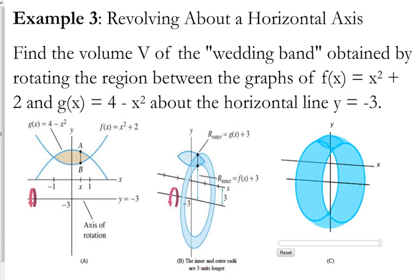So we're going to find the volume V of, they're calling this a wedding band, obtained by rotating this region between the graphs x squared plus 2 and 4 minus x squared. But instead of going around the x-axis, it's going around the horizontal line y equals negative 3.